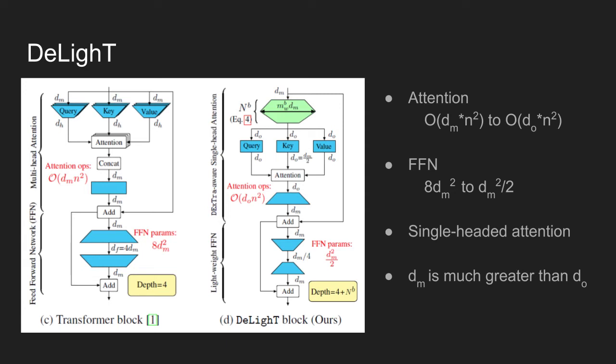Note that the DeLighT block now uses single head attention instead of multiple head attention. This is possible because the DeLighT block learns wider representations of the input across different layers using the DExTra module. The feed forward network is also reduced from 8 times D_M squared to D_M squared over 2. Two linear layers are used like in existing transformer architecture. However, in the new architecture, the first layer reduces the dimensionality of the input and the second layer expands the reduced feature using the reduction factor R.